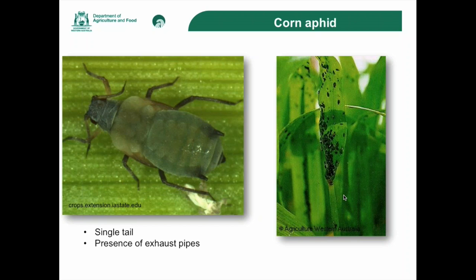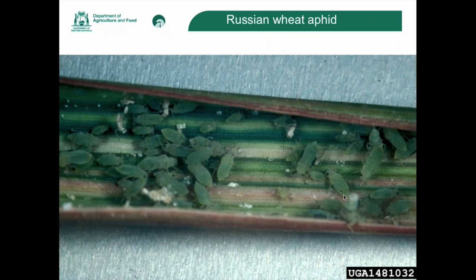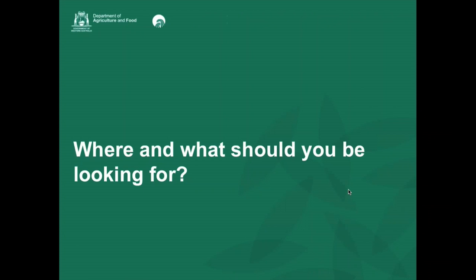Certainly in South Australia they picked up symptoms pretty quickly. The wingless version is much easier to identify than the winged ones, so really hone in on the wingless version. In terms of the leaf curling, this photo shows the leaf has been unfurled — you can see the streaking, but those streaks aren't always yellow; they can go to reddish purple as well. Some of these symptoms can be confused with virus symptoms, so it's important to get in there and uncurl some of these leaves and have a look.